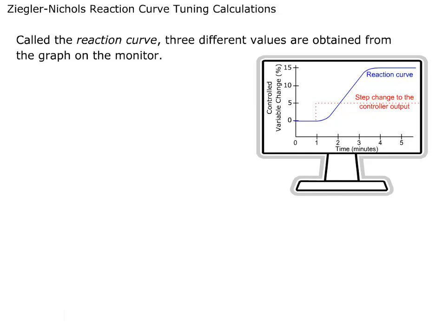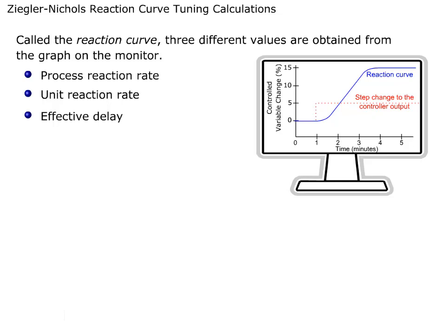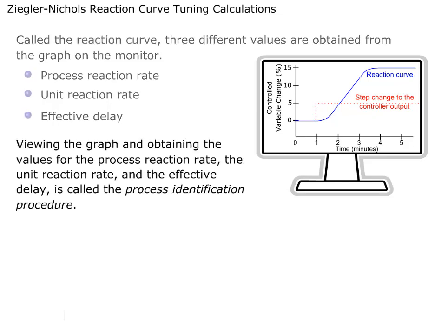These include the Process Reaction Rate, the Unit Reaction Rate, and the Effective Delay. Viewing the graph and obtaining the values for the Process Reaction Rate, the Unit Reaction Rate, and the Effective Delay is called the Process Identification Procedure.